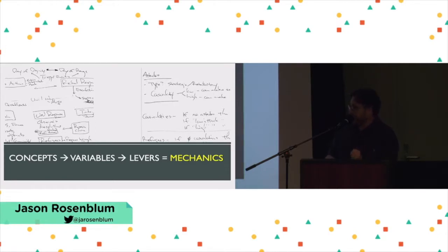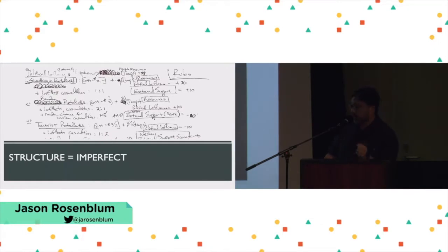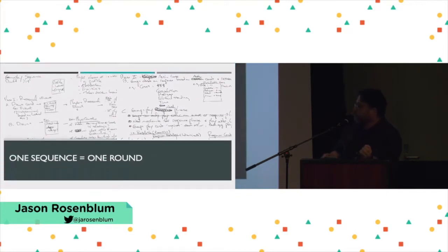Those variables got turned into levers that serve to flip the mechanics of the game one way or another. I then took those mechanics and sketched out an imperfect structure using math, trying to balance how and when those levers would get flipped — things like the exponential rise of refugees over rounds of play and the exponential rise in casualty counts. I then mapped out one sequence, one round of play, so my colleagues could follow the action and see when and why the game mechanics would shift.